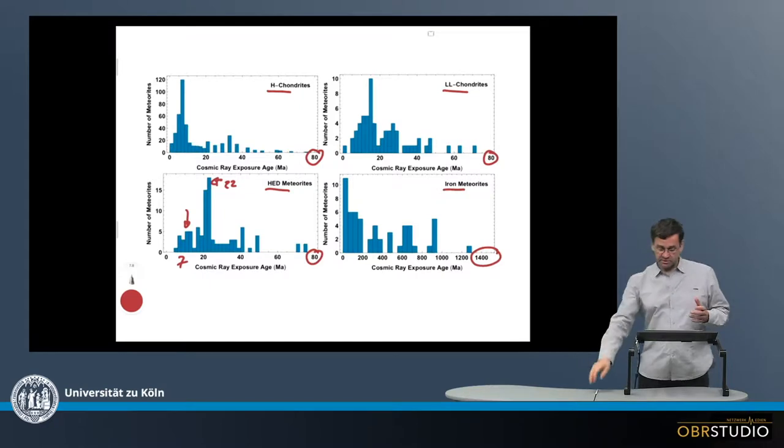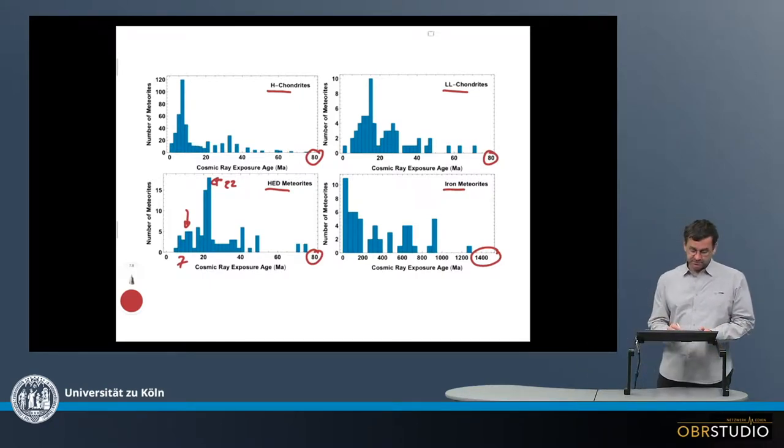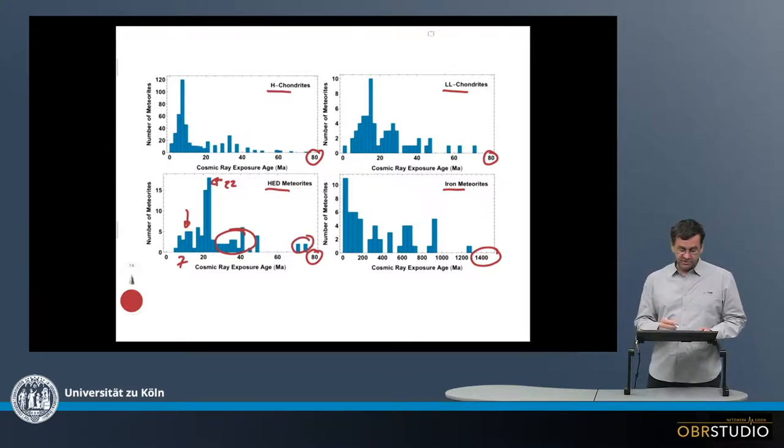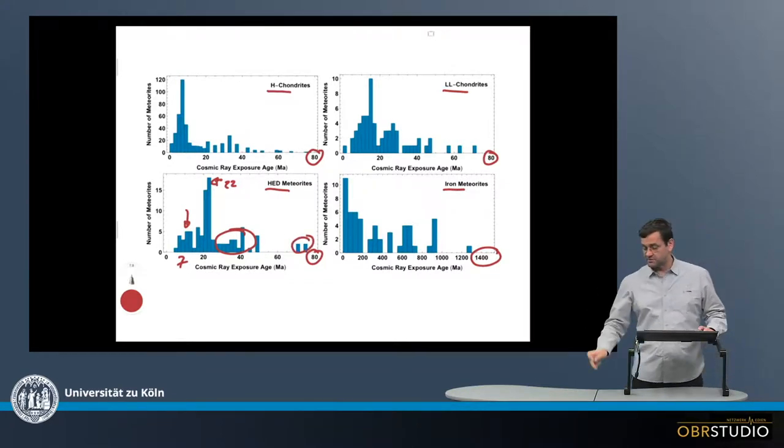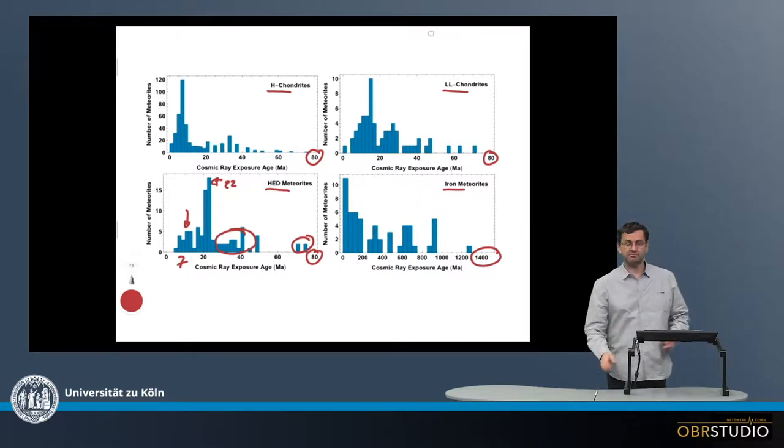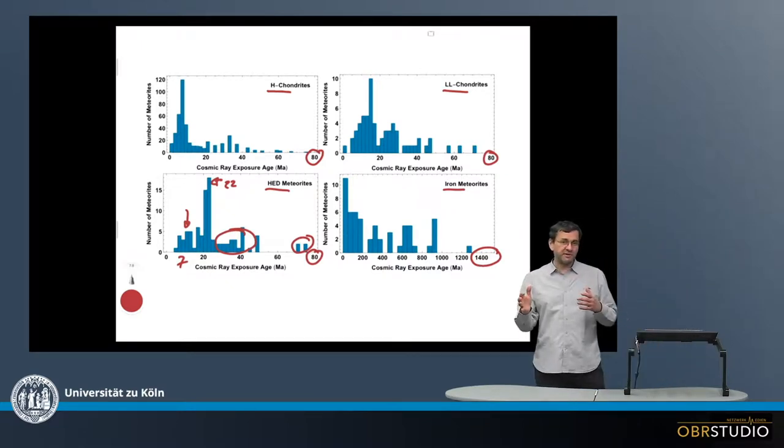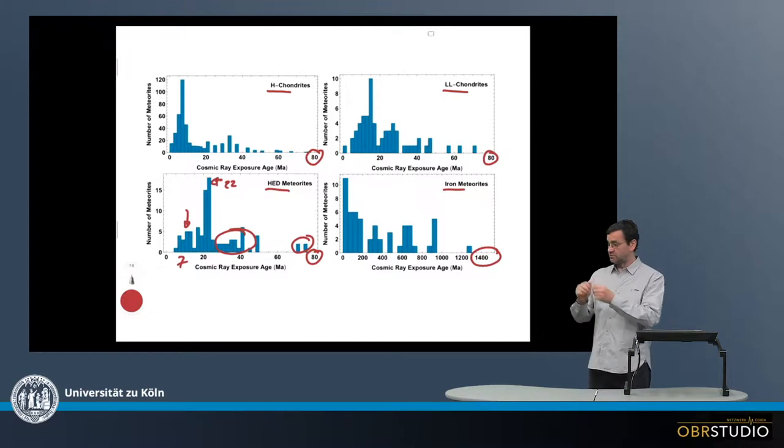I mean, there are more than these two peaks. There are also all these chondrites from these HED meteorites. But two major peaks at 22 and 7 million years, and it's then assumed that maybe there were two larger impacts at 7 and 22 million years.